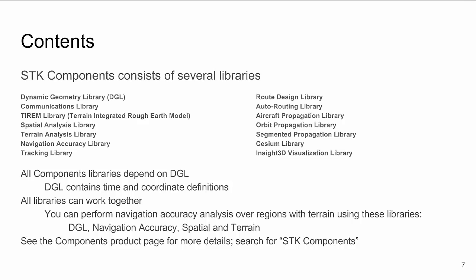There are several different libraries that make up SDK Components, generally separated by problem domain. The Dynamic Geometry Library, also known as DGL, is the base library that contains the methods for time, coordinates, and reference frames. All other libraries require DGL, so you'll always use it in your program. You can search for SDK Components and read about each library on our product page to decide whether you need it.